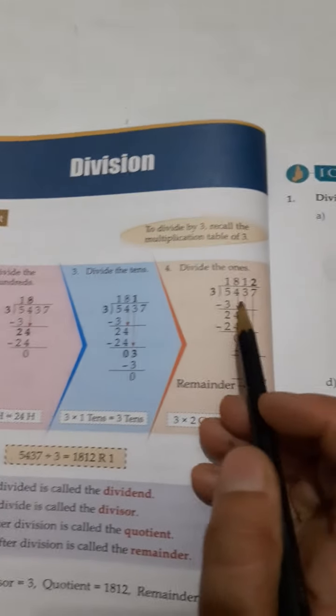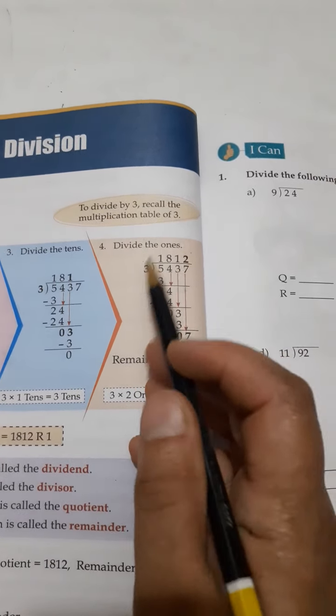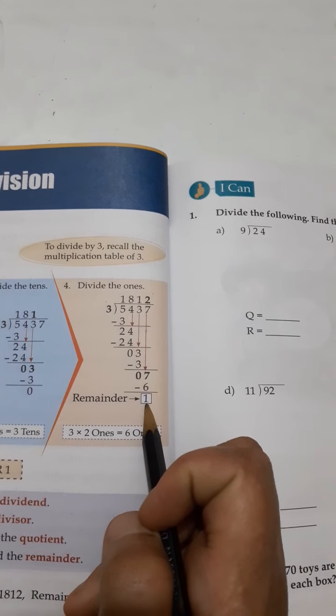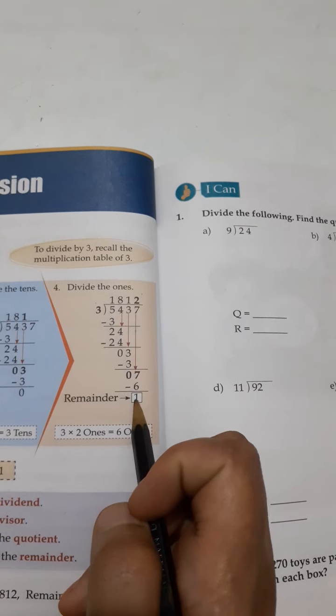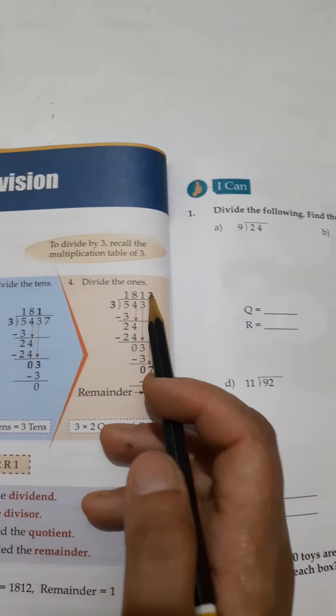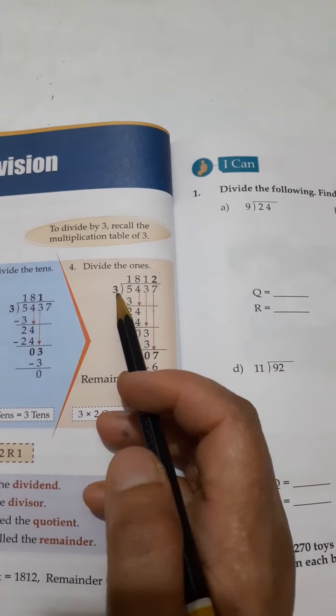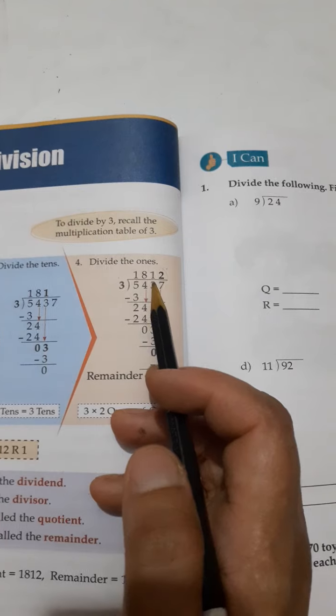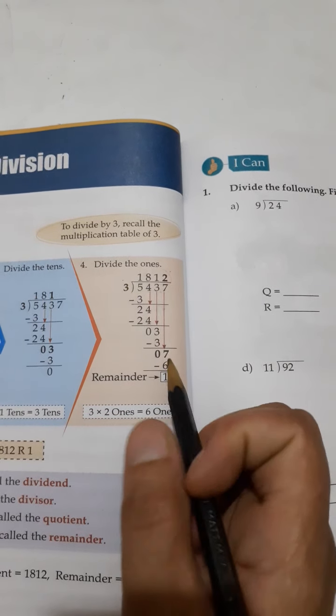The first question is you have to divide 5437 by 3. After dividing it, you get the remainder. The answer at the end of the question is the remainder. The answer which you got is the quotient. The number which you are using for dividing anything, that is a divisor, and the number which you are dividing is now known as dividend. So these are the 4 things: dividend, quotient, divisor, and remainder.